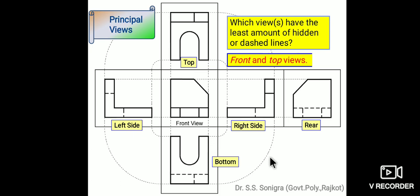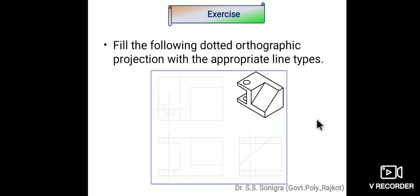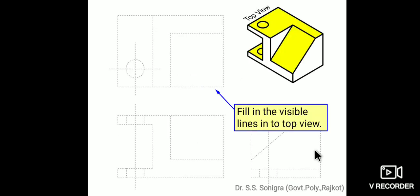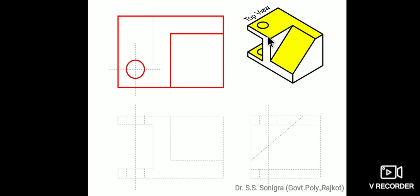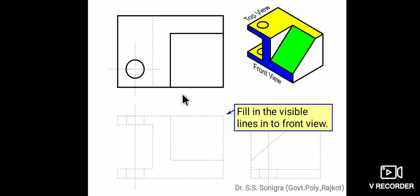Now fill the following dotted orthographic projections with the appropriate line type. This is an object; dotted lines are drawn in front view, top view, and side view — find out which line will be full and which will be dotted. Starting from the top view: these lines are visible, so draw them as full lines. This corner is hidden, not visible in top view. The circle is visible. These lines are visible — so the circle and hidden corner lines should be dotted; the rest should be full lines.